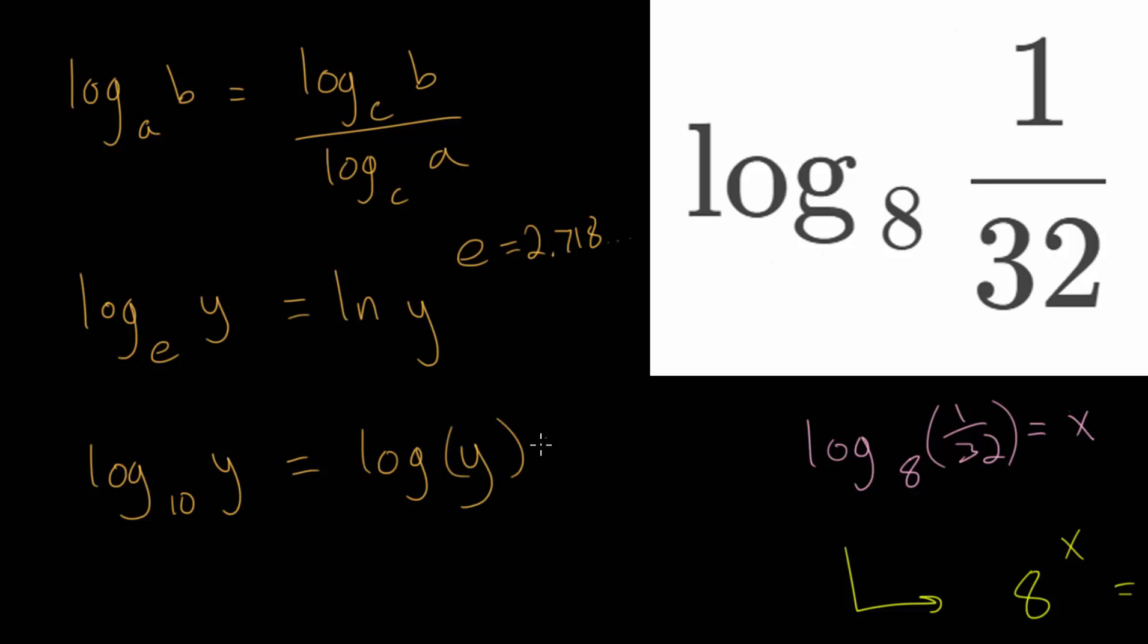So we can rewrite this using the change of base rule. We can say that we have log base 8 of 1 over 32, and let's just use the common log. We'll put the original input in the numerator, and we're using the common log, so we don't write that it's base 10, but we can assume that we have log base 10. So we have log of 1 over 32 divided by log of 8, and when you put this into the calculator, you will get the exact same answer. We still get this minus 5 over 3. So this is a great way to check our work, but ultimately solving this by hand is the technique that you want to learn.